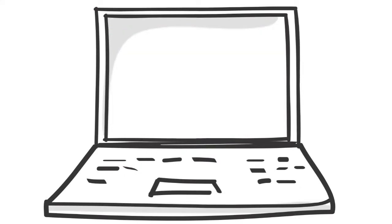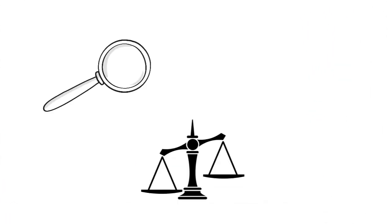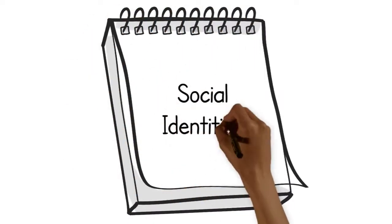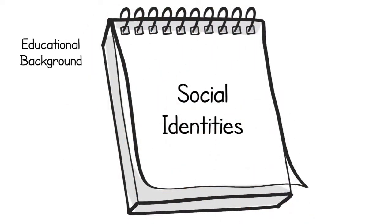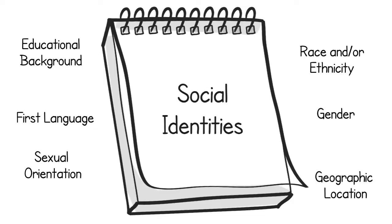While these are the more well-known parts of research, there are also the internal factors that influence where we search for information, how we evaluate the resources we find, and what information we produce ourselves. We often refer to these factors as our social identities, which can include our educational background, race and ethnicity, our first language, gender, sexual orientation, geographic location, and more.